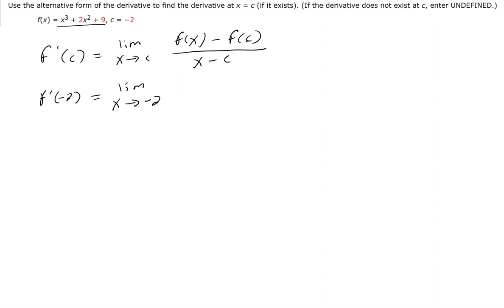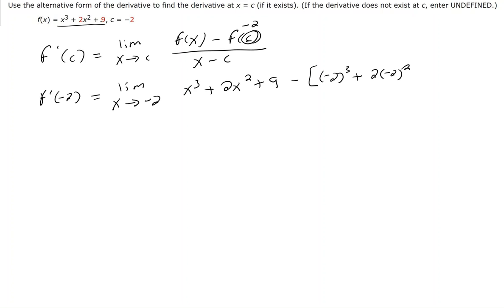Now f of x is this function here, so f of x is x to the third plus 2x squared plus 9. Then f of c — and we know c is negative 2 — so I'm going to replace the x's with negative 2. I had x to the third, so now I have negative 2 to the third, then plus 2 times negative 2 squared, and then plus 9.